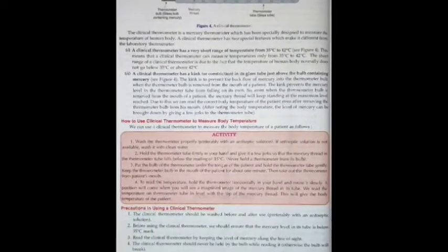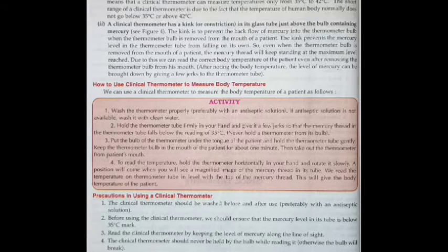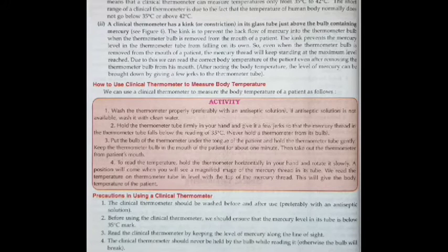Precautions for the clinical thermometer: it should be washed before and after use. Before using it, ensure that the mercury level is below the 35 degree Celsius mark. Read the clinical thermometer by keeping the level of mercury along the line of sight. Never hold the thermometer by the bulb while reading it, as it may affect the reading.